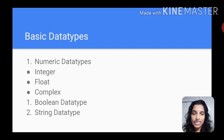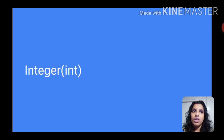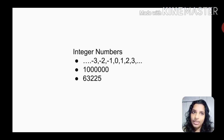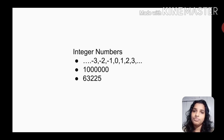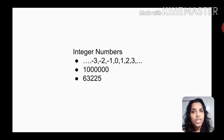Boolean data type and string data type — a string is a word, sentence, or paragraph. Now, integer data type is int. In the abbreviation, we call it integer. Integer numbers are whole numbers: minus three, minus two, minus one, zero, one, two, three. These are integer data types.